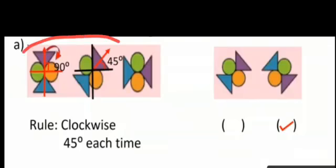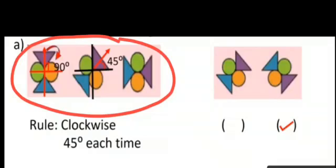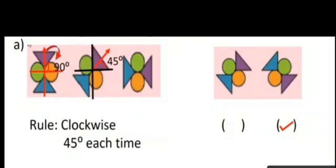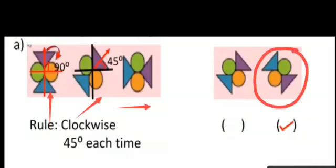Here three positions of a shape are given. We have to select the fourth position from two options. At the beginning it is in a standing position, then it is moving 45 degrees, and the third position again moves by 45 degrees. So the fourth position will be this one after turning 45 degrees — the rule is clockwise 45 degrees each time.